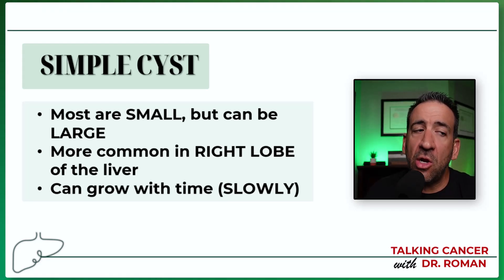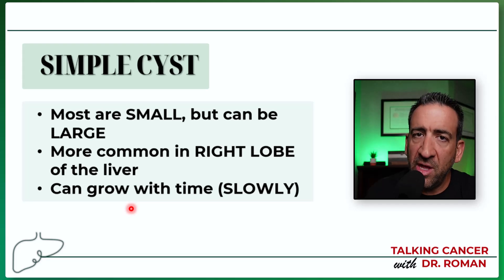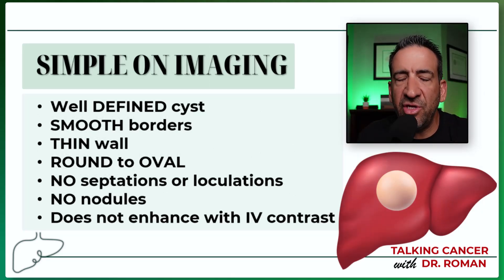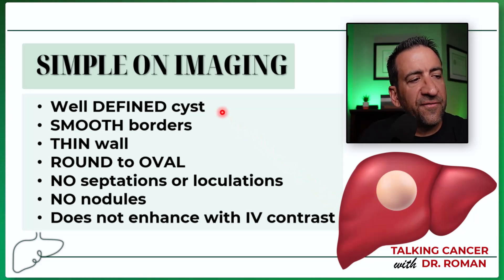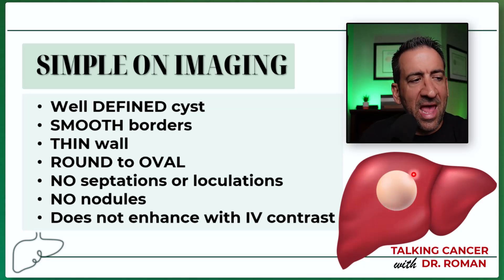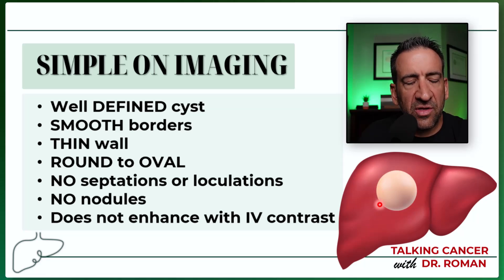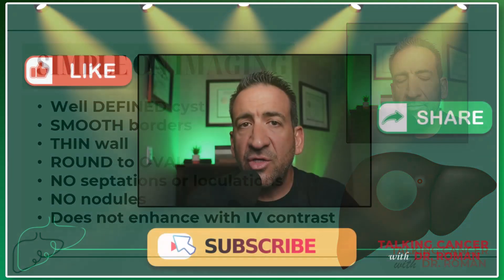Simple liver cysts are much more common and tend to be small, though at times they can be very large. They're more common on the right side of the liver, but can appear on both sides. They can grow with time, though slowly — so growth alone does not mean cancer. On imaging, a simple cyst appears well-defined, round to oval, with smooth borders, very thin walls, no septations or loculations, no nodules inside, and the border does not enhance when contrast is injected.